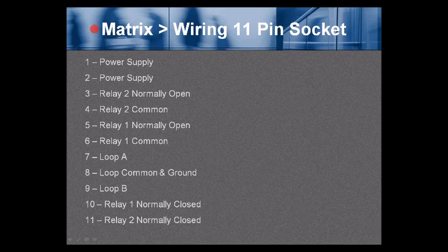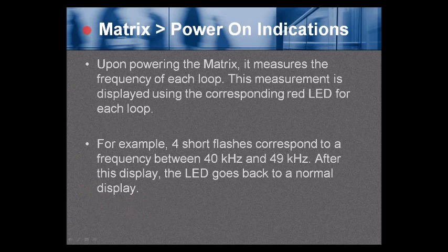Wiring — the 11-pin socket: pin 1 and 2 power; pin 3 relay 2 normally open; pin 4 relay 2 common; pin 5 relay 1 normally open; pin 6 common for relay 1; pin 7 Loop A; pin 8 loop common and ground; pin 9 Loop B; pin 10 relay 1 normally closed; pin 11 relay 2 normally closed.